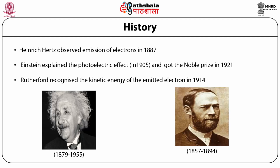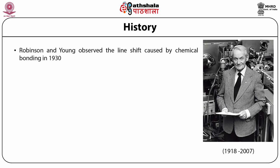Rutherford and his co-workers in 1914 recognized that the kinetic energy of the electron is the difference between X-ray energy and the electron binding energy. Robinson and Young observed the line shift caused by chemical bonding in 1930 — that is, they observed the effect of different types of bonds present in a compound, or how an element is attached with different types of bonds.